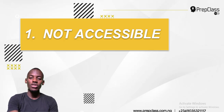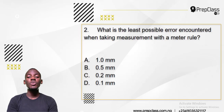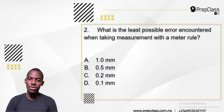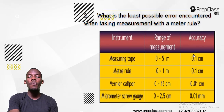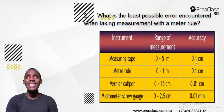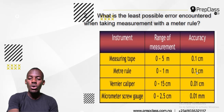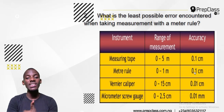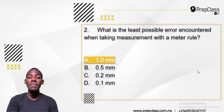Number two: what is the least possible error encountered when taking a measurement with a meter rule? Is it one millimeter, 0.5 millimeter, 0.2 millimeter, or 0.1 millimeter? This question is simply asking for the accuracy of a meter rule. It is 0.1 centimeter, but if you change it into millimeters — since 10 millimeters make one centimeter — you multiply 0.1 by 10 and get 1. So the answer is 1.0 millimeter or 0.1 centimeter.